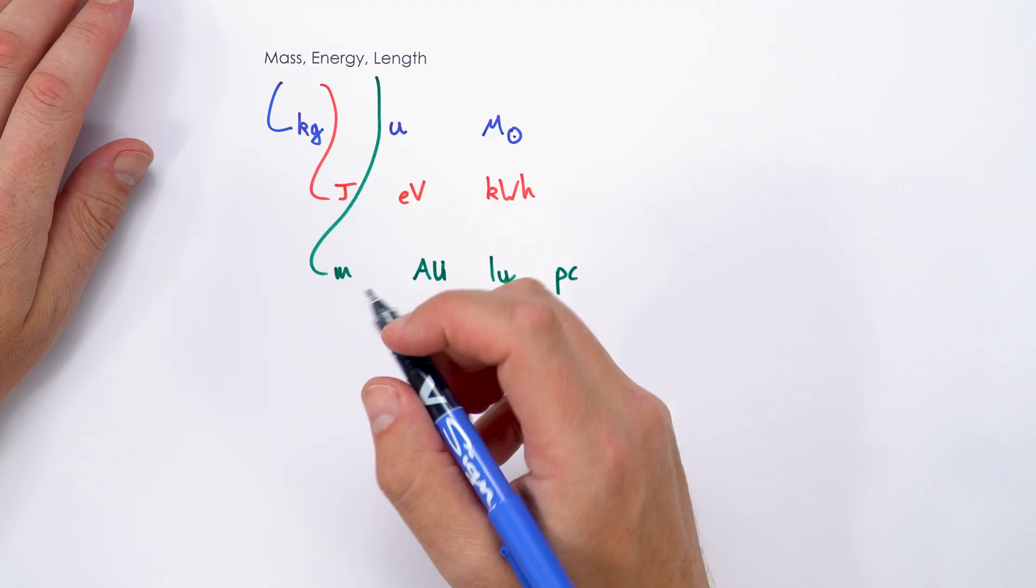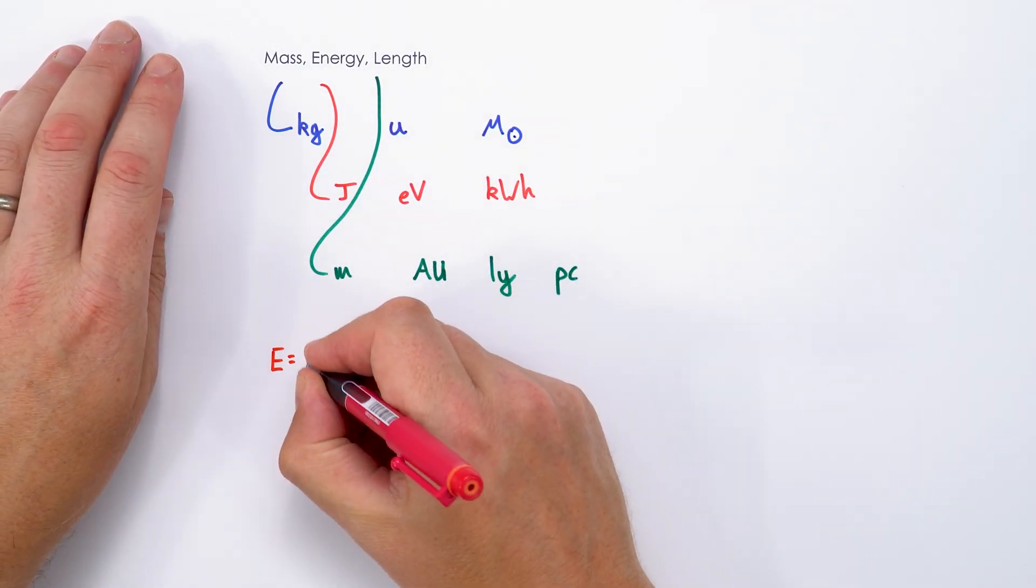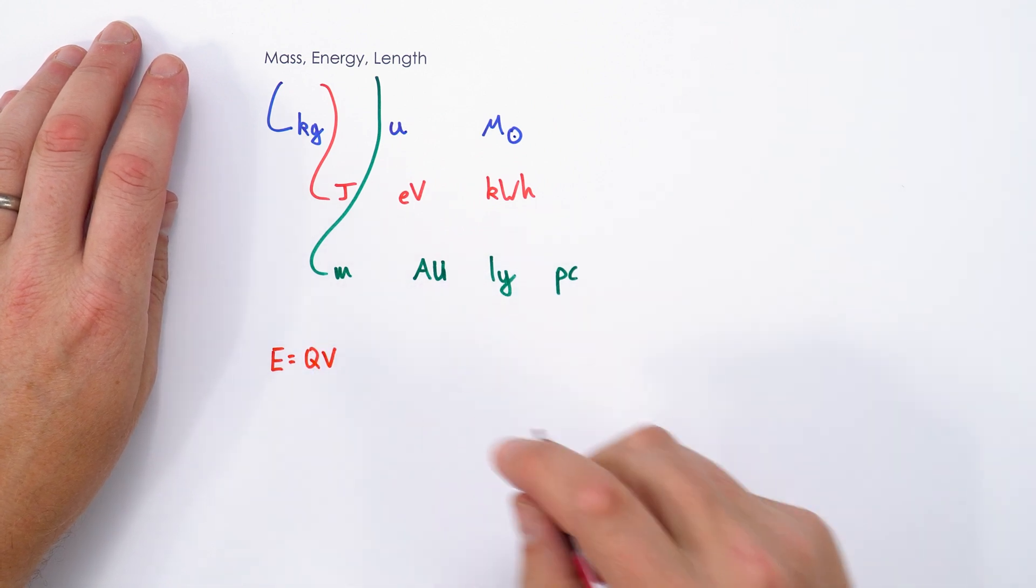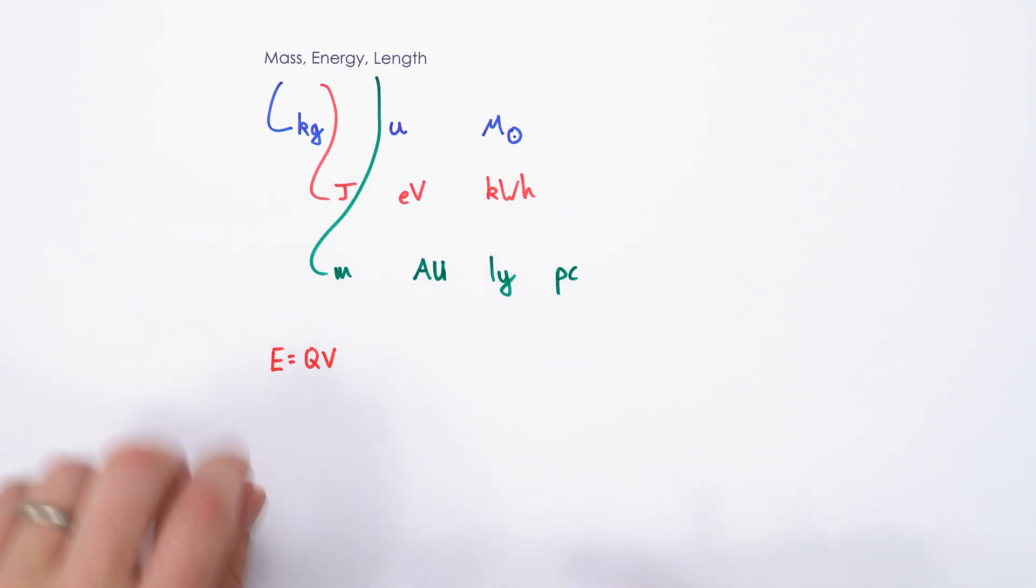Now to convert from joules to electron volts, we need to first think about the equation that says E is equal to QV. If you had a charge multiplied by a certain potential difference, that would tell you the energy that it's gained.